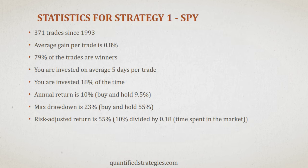Because of less time spent in the market, the max drawdown is substantially lower at 23% versus buy and hold's 55%. We might also argue the risk-adjusted return is 55%, calculated by taking the annual return of 10% and dividing it by 0.18, which is the percentage of time spent in the market.